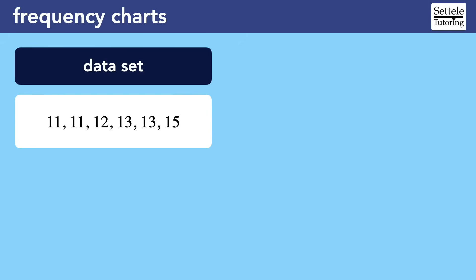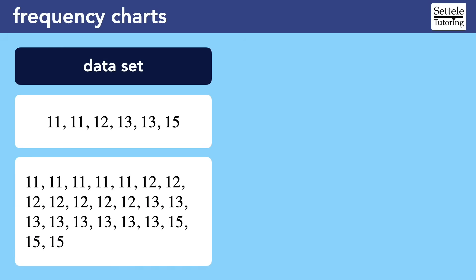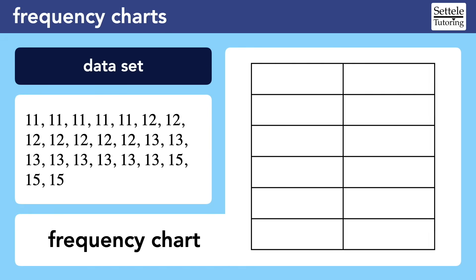When we first learn basic statistics in school, we're usually given a short list of numbers as our dataset. With just a few values, it's relatively easy to quickly calculate the mean, median, mode, and range. But for larger datasets, a list of numbers is not ideal — they're hard to work with because it's so easy to lose a number, which would mean miscalculating things like the mean and median. Instead, we're better off having the dataset in a frequency chart.